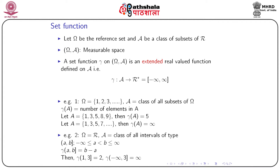Let us talk about a few examples. Suppose the reference set omega consists of natural numbers 1, 2, 3, 4, and so on, and script A consists of all subsets of this omega. If we define the set function gamma(A) as the number of elements in A, then for different sets A we will have different numbers. For example, if A consists of elements 1, 3, 5, 8, and 9, then gamma(A) will be 5 because there are only 5 elements in this set.